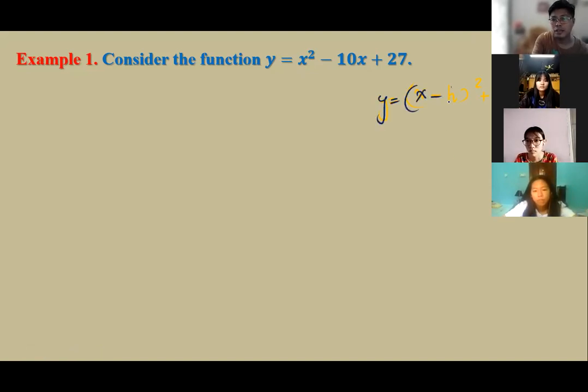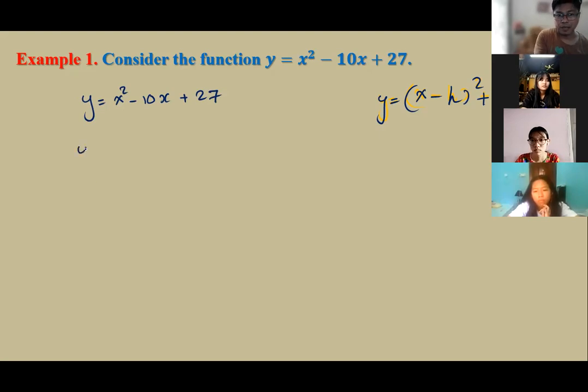x minus h the whole square plus k is vertex form. Translation is: y is equal to x squared minus 10x plus 27. Okay. Vertex form.